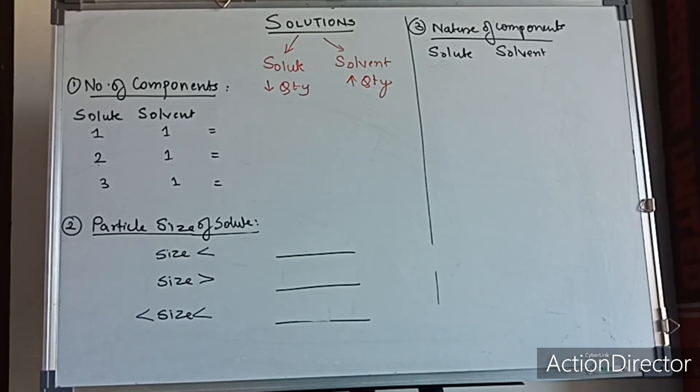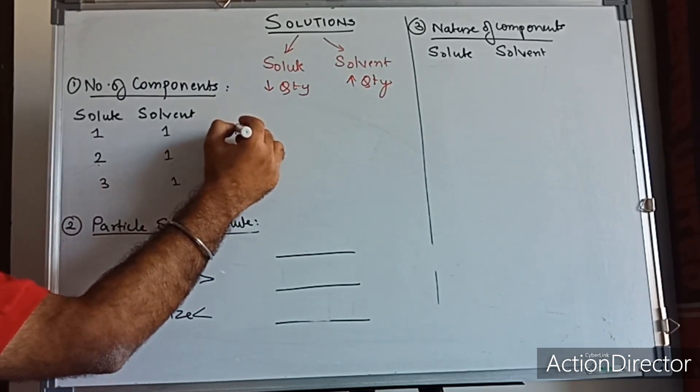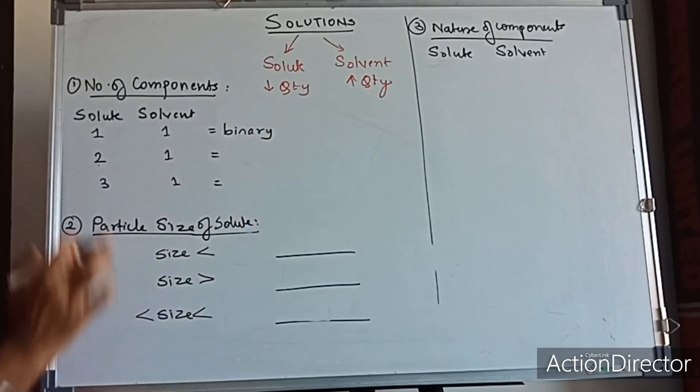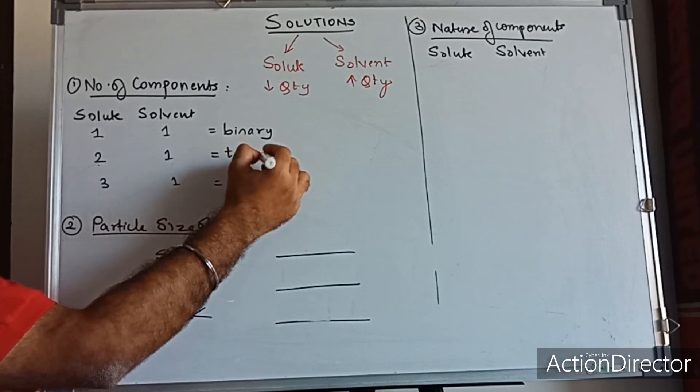Alright, so let's take one at a time. The first classification is on the number of components. So in a solution agar ek solute hai or ek solvent hai, so total value is 2 and therefore such a solution is called as a binary solution. 2 plus 1 is 3, in that case it is called as a ternary solution.